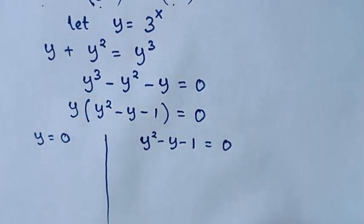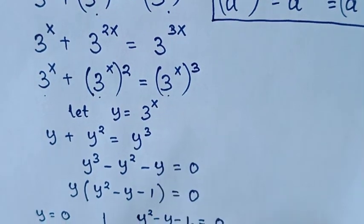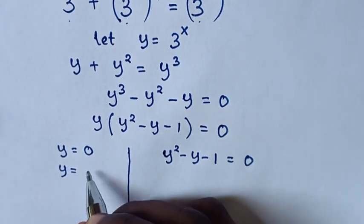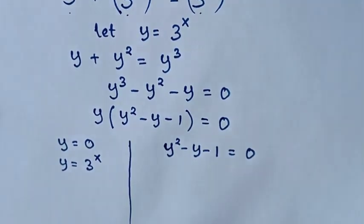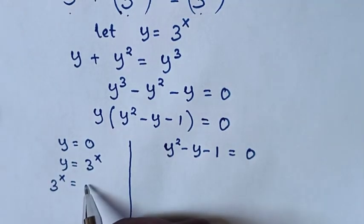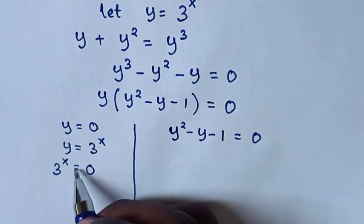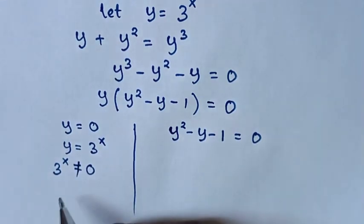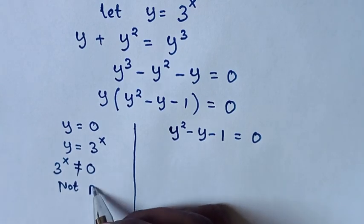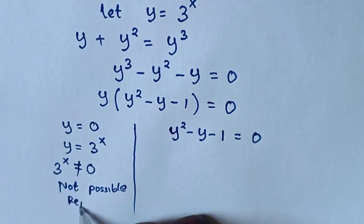We have two solutions: y is equal to 0, and y squared minus y minus 1 is equal to 0. But remember, we let y equal to 3 power x, so 3 power x equal to 0 is not possible. Therefore this solution is rejected.